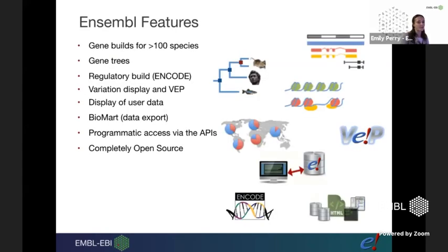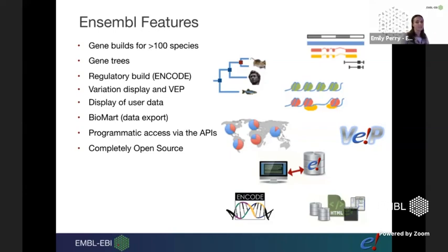In Ensembl we have gene annotation for over 200 species. We have gene trees, which involves the comparison of all genes to each other. We have regulatory data for human and mouse, variation data, a tool for analysing your own variation data called the VEP, and data export. Some ways to export data include Biomart, a point-and-click tool. Today we're talking about programmatic access via the APIs, which is completely open source.